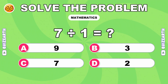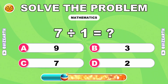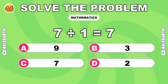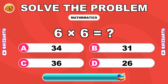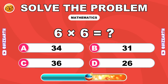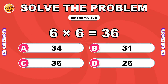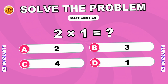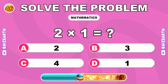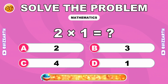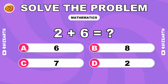How much is 7 divided by 1? You're a machine. The answer is 7. What do you get when you multiply 6 by 6? No stopping you. The answer is 36. What is 2 times 1? Sharp as ever. The answer is 2. How much is 2 plus 6?